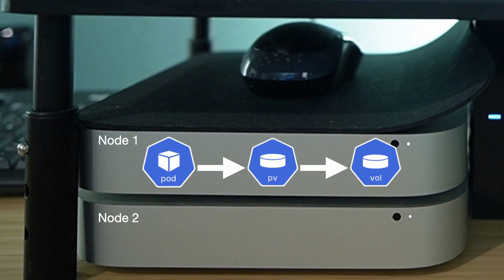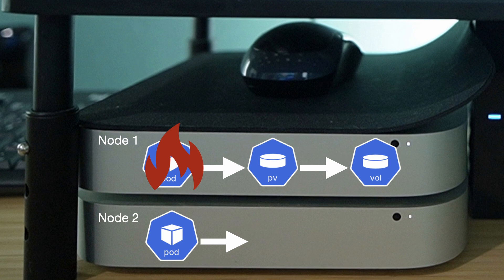Let's use my little cluster here for an example. Let's say that I have a workload running on node 1, and it has a host path volume attached — at this point everything works just fine. But what if one node becomes overwhelmed and this workload needs to be moved to node 2? Now you have a workload on node 2 that is looking for a volume that only exists on node 1, and it won't be able to start up because the volume isn't available.